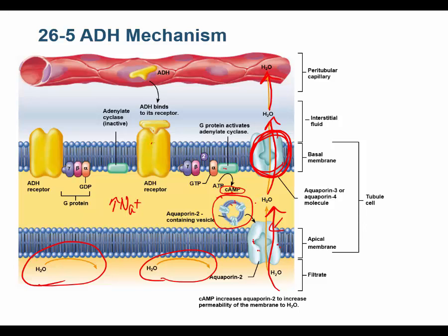Aquaporins 3 and 4 are always in the basal membrane of distal convoluted tubule and collecting duct cells. ADH inserts aquaporin 2 into the apical (lumen-facing) membrane, allowing water into the cell; it then exits via aquaporins 3 and 4 into the interstitial fluid and then the bloodstream. The proximal convoluted tubule has aquaporins in both membranes all the time — ADH only acts on the distal tubule and collecting duct.